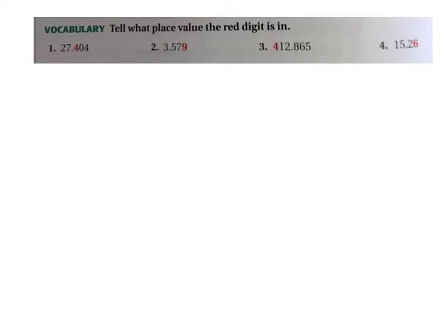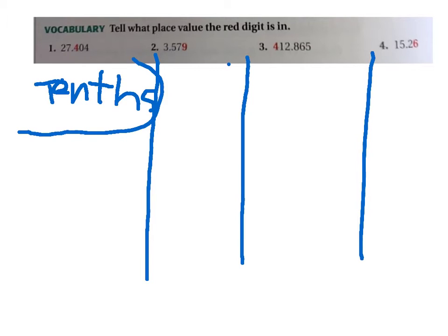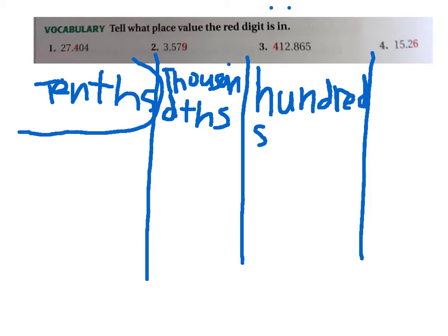Number one: twenty-six and four hundred and four. The red digit is the fourth because the boy is in the tenth place. The nine is in the thousandth place. The fourth is in the hundreds. Six is in the hundredths.